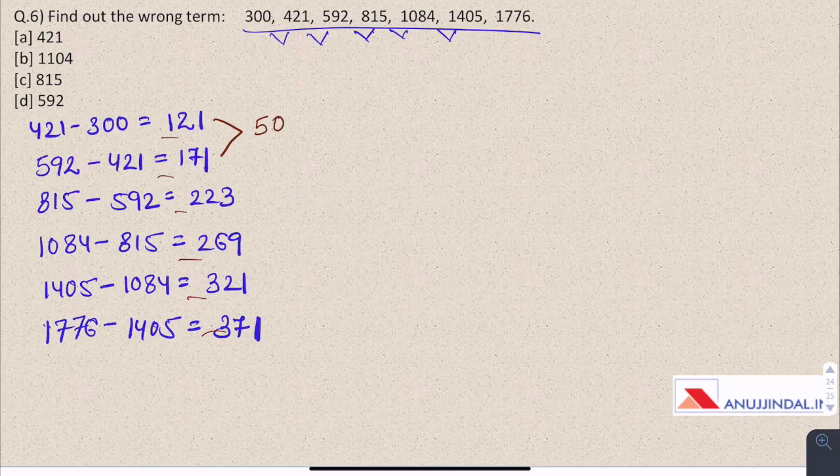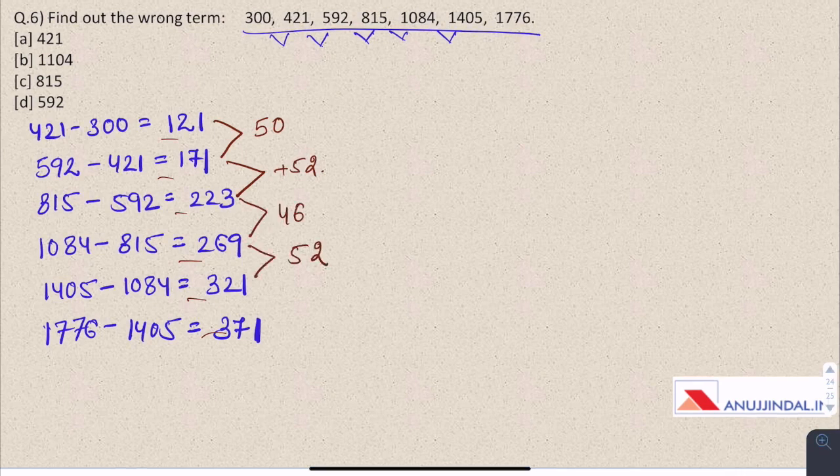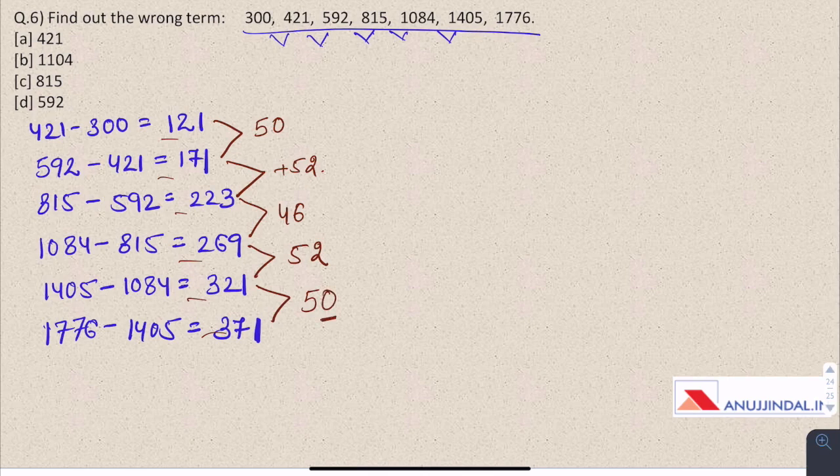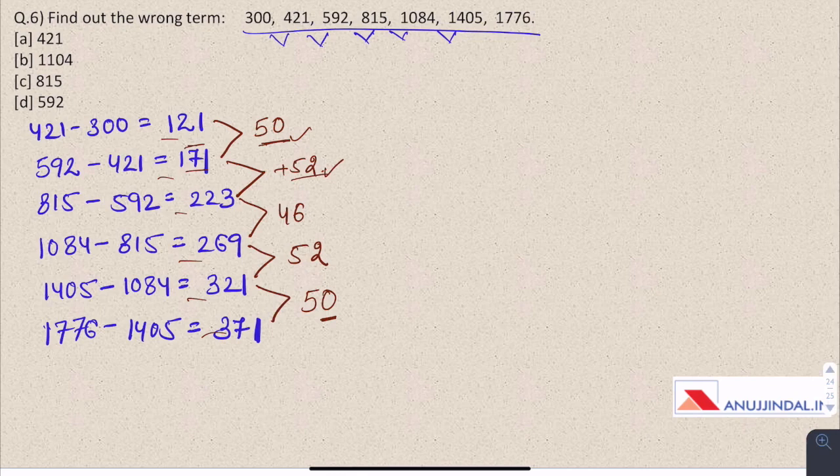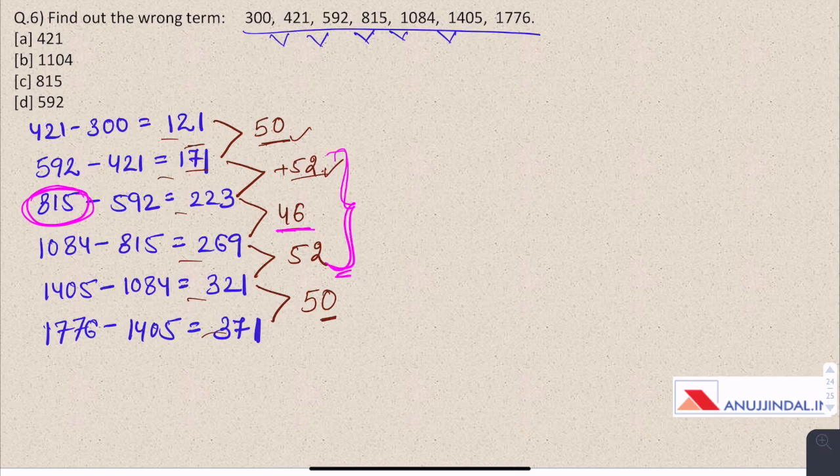Let us find out their differences as well. This is 50, the difference between 121 and 171. This is 52, then 46, then again 52, and between 321 and 371, which is 50. So here we have realized that either the difference or the number by which the difference increases could be 50 or 52, but not 46. So this makes us realize that there is definitely something wrong with this number 815, as it is involved in these calculations.